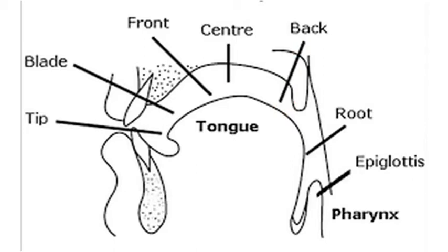The part where the front and the back meet is called the center. The edges of the tongue are called the rims.